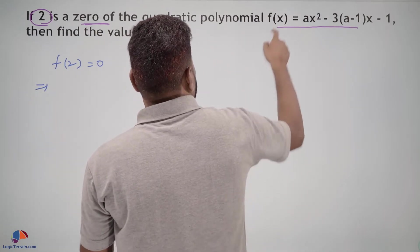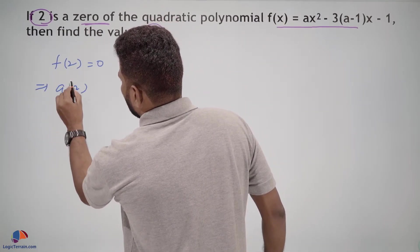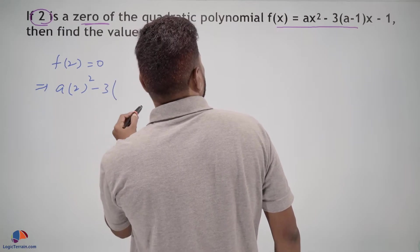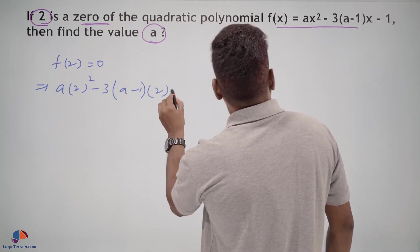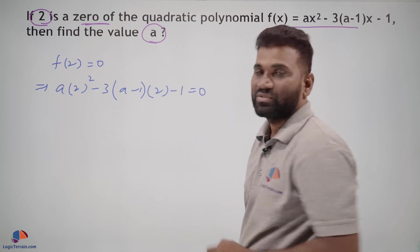That implies a(2)² - 3(a-1)(2) - 1 = 0. Simply we have replaced x by 2.